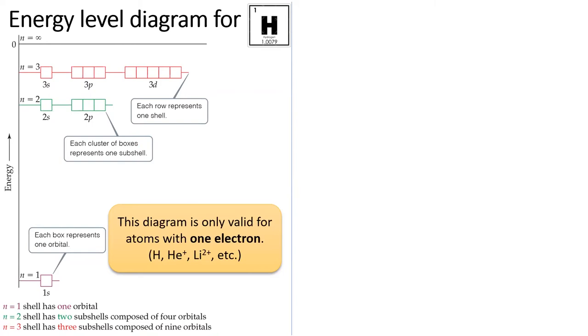Last lesson, I showed this diagram, which arranges the orbitals based on their principal quantum number n, also known as their energy level. Unfortunately, this diagram is only true for systems with one electron, such as a neutral hydrogen atom.